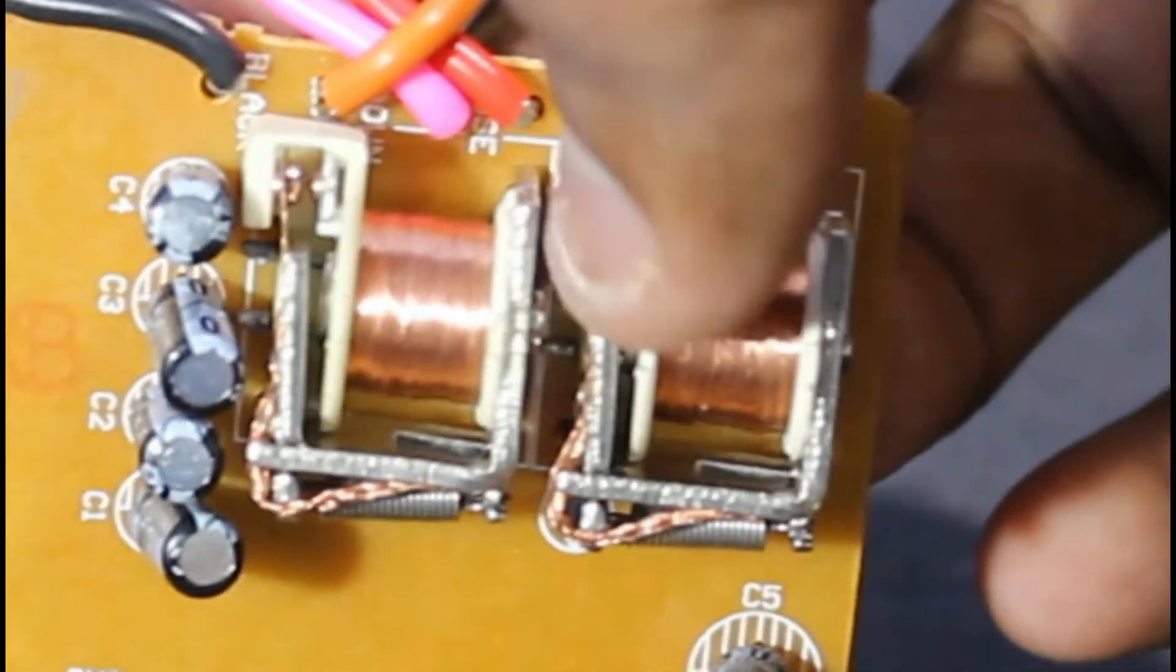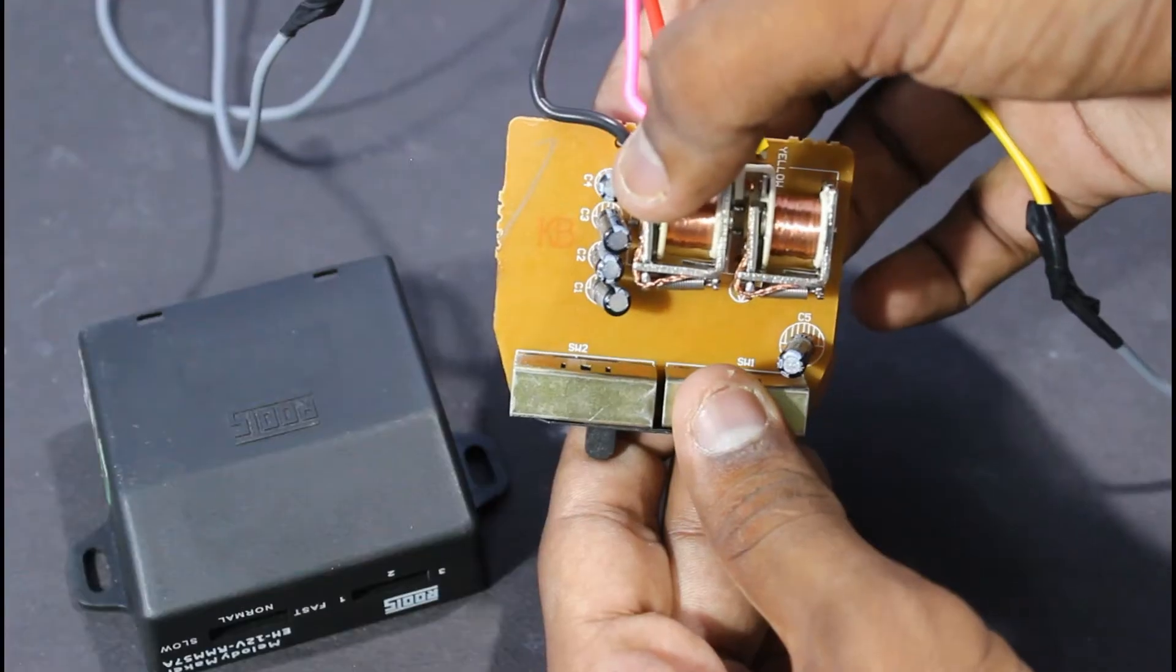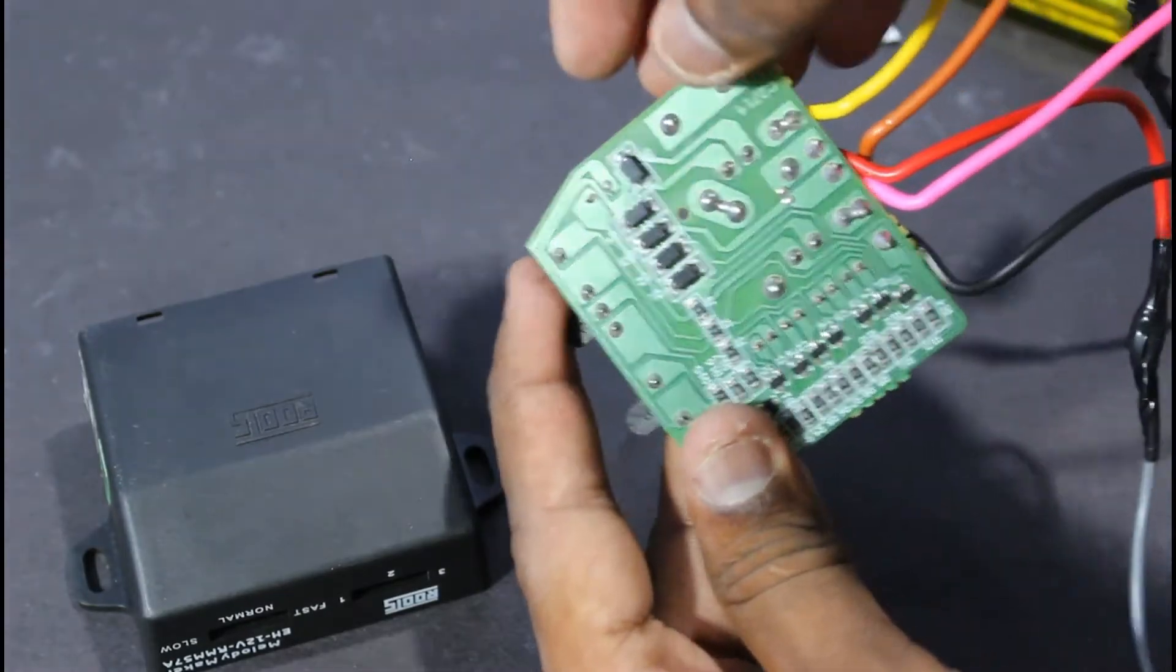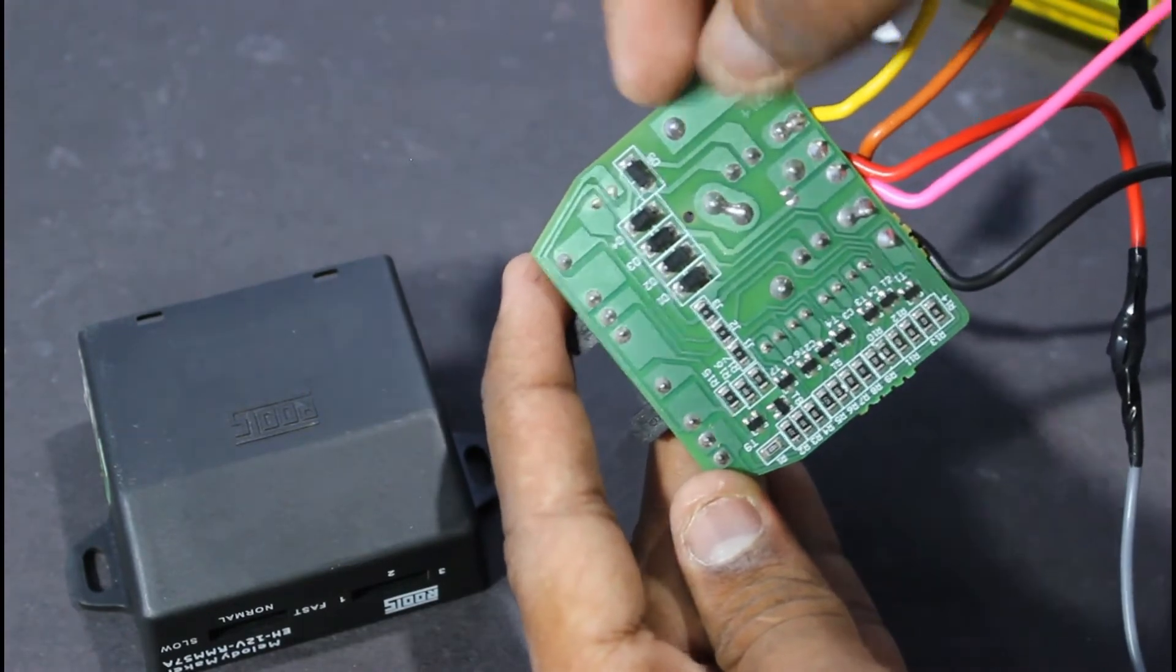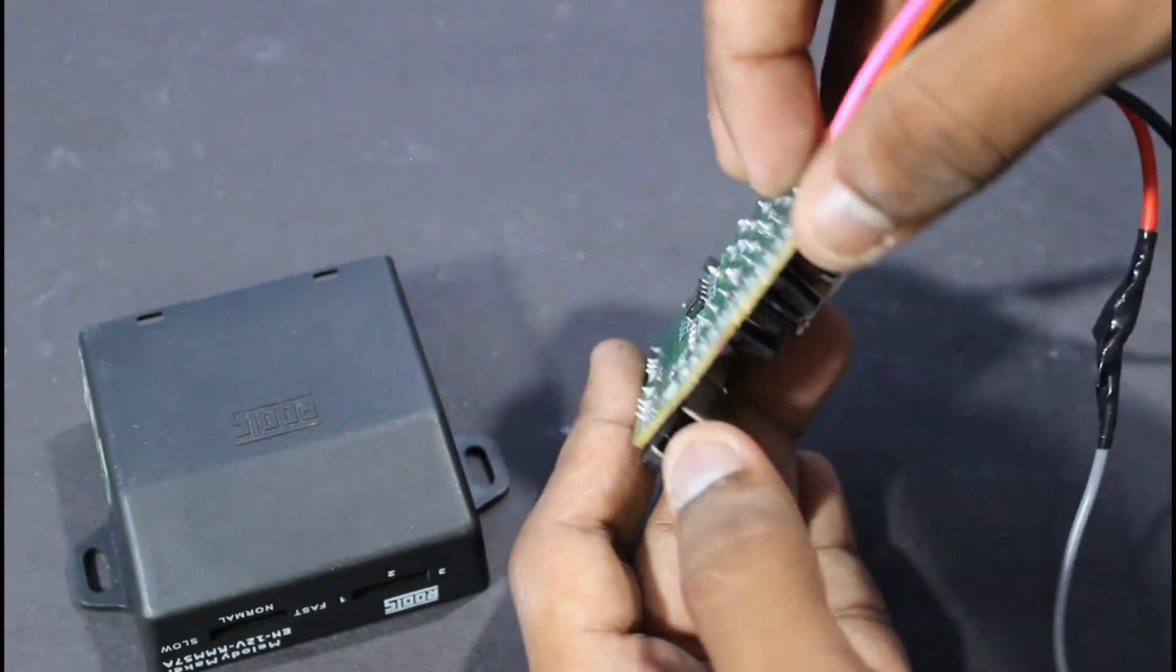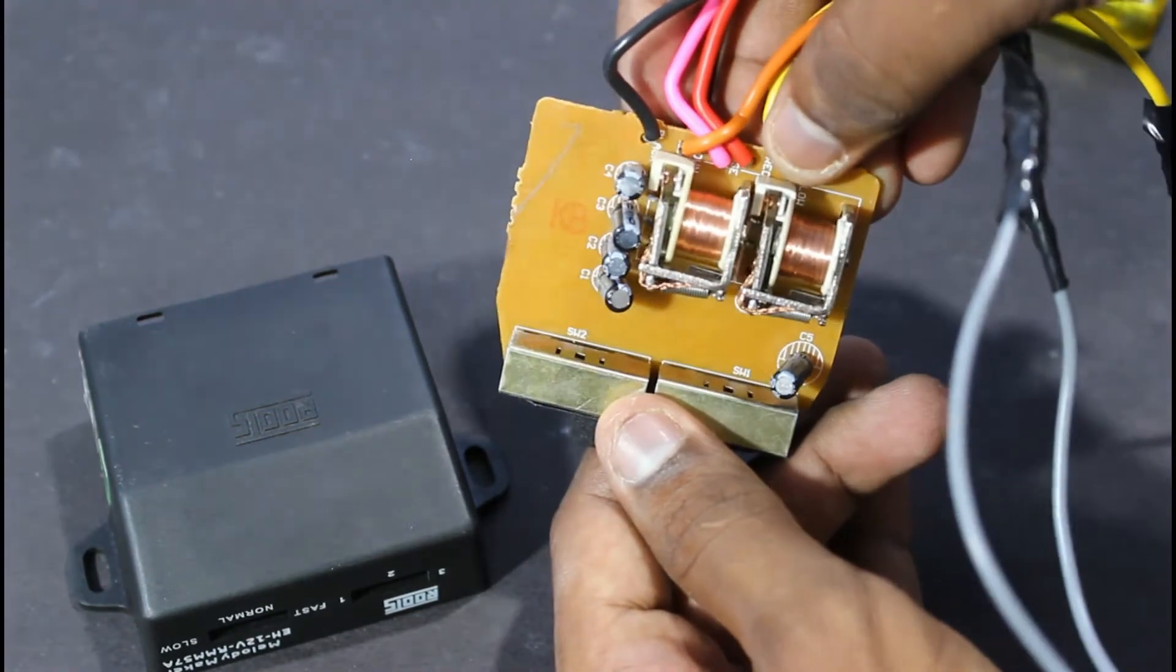This is the relay. This is the presser. This is the sound. This is the circuit. This is the relay control. This is the output. This is the relay. This is the 12V 10A.